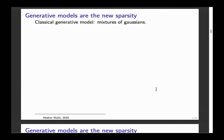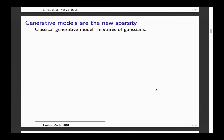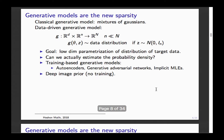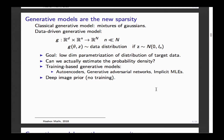Maybe it is a reasonable claim that generative models are the new sparsity for this field. A generative model — one classic example is the mixture of Gaussians — but now we're going to use a much more complicated generative model that aims to learn the distribution of your actual data.